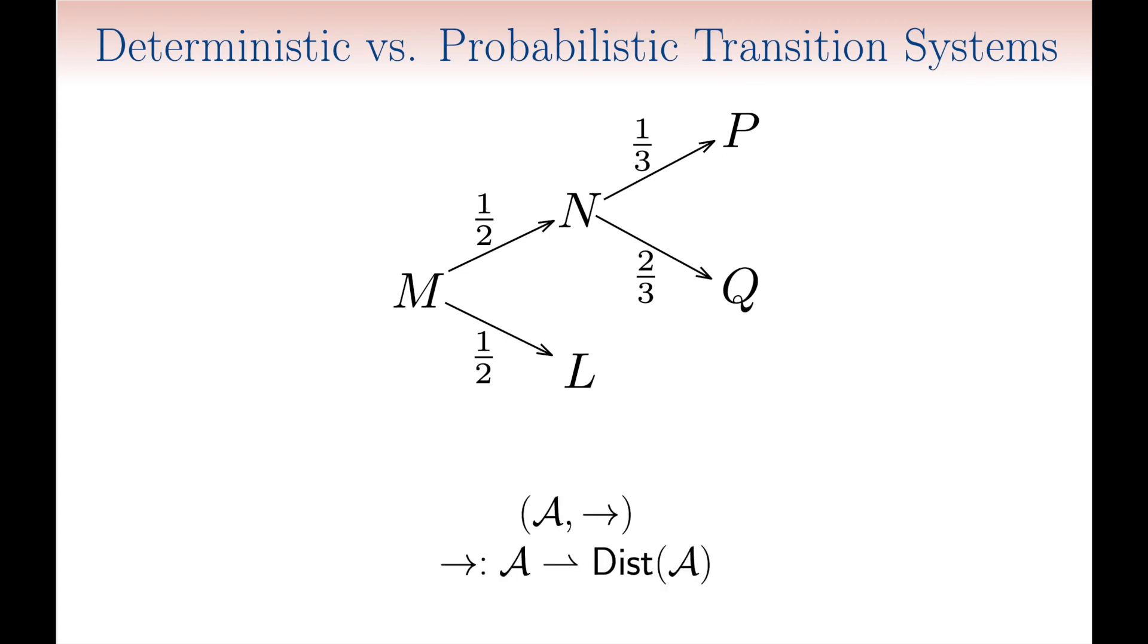The deterministic transition systems, in other words, are naturally replaced by probabilistic transition systems, in which the reduction relation maps any state to a distribution of states when defined.